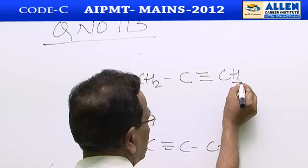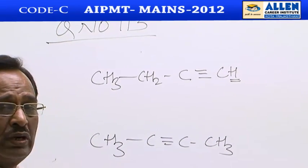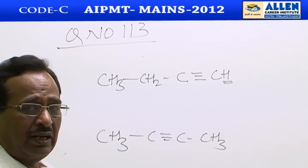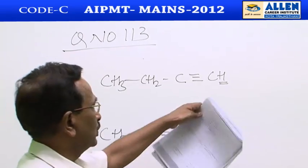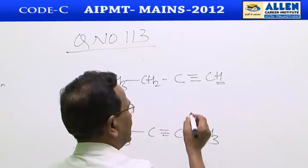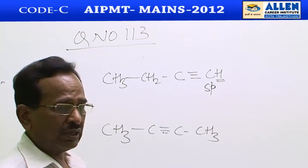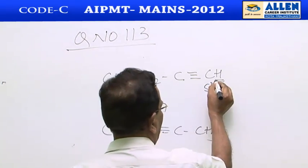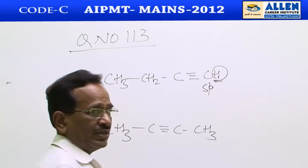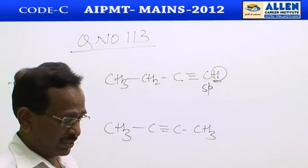It is very clear - 1-butyne contains a very weakly acidic hydrogen. Because this hydrogen is attached with SP hybrid carbon atom, which is more electronegative, hence this hydrogen is acidic, very weakly acidic hydrogen.